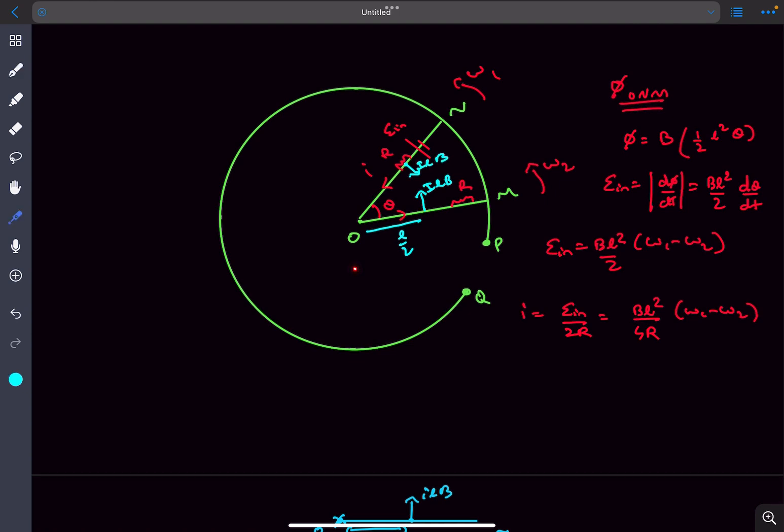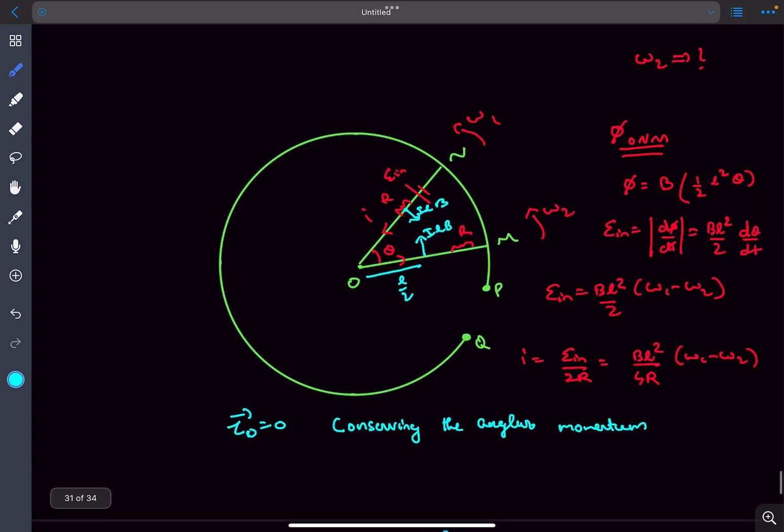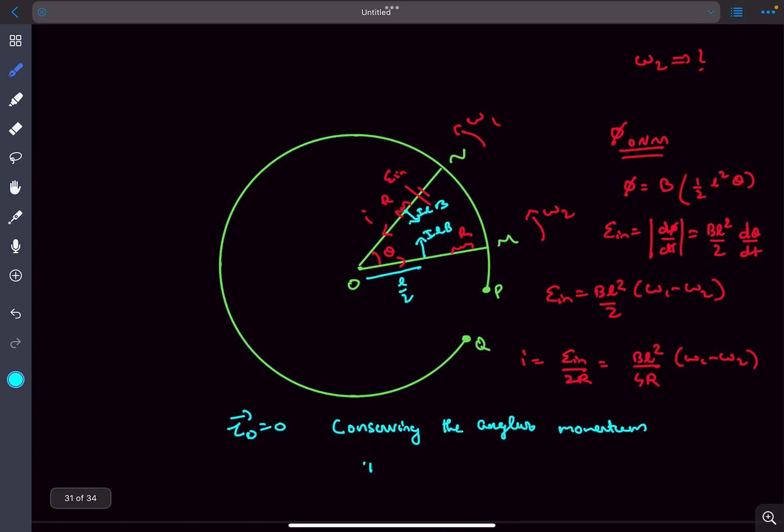Now if you observe, if you take the rod ON and OM as a system, you can see the net torque about the origin is zero. So as the net torque about the origin is zero for the system, we can conserve the angular momentum. Initially the angular momentum was I omega naught and at any general time t it is I omega 1 plus I omega 2. From here we'll get our first equation: omega naught equals omega 1 plus omega 2.